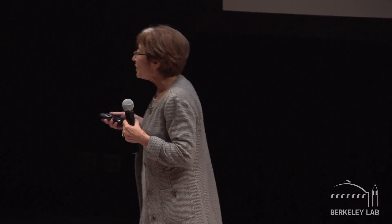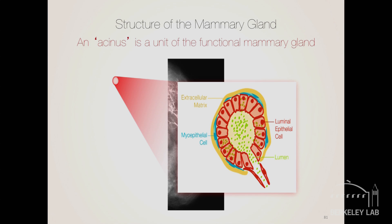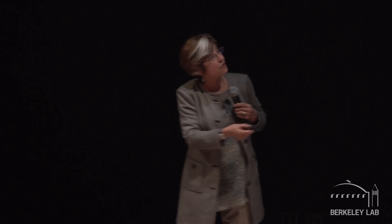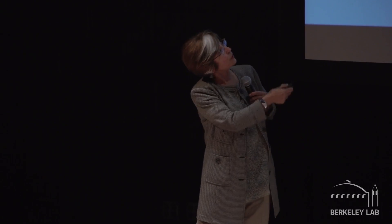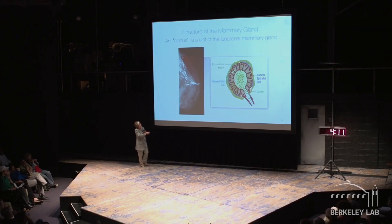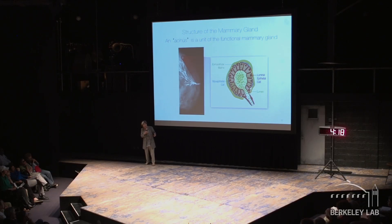We decided that we really know nothing about this, and what we are going to do is make a model. We chose the mammary gland. That's a picture of the human mammary gland — a beautiful three-dimensional structure. Around it are fat, but we have about seven or eight of these. We decided that was too complicated, so we concentrated on what we call an acinus, which is what the mammary gland makes when an animal gets pregnant.